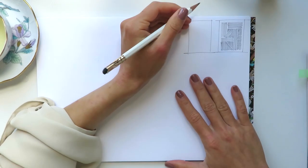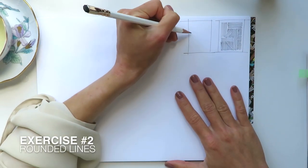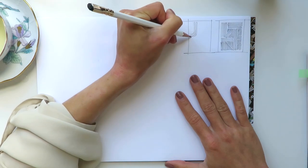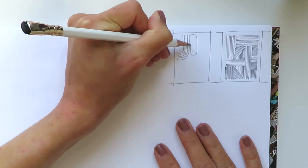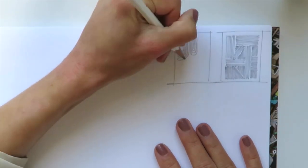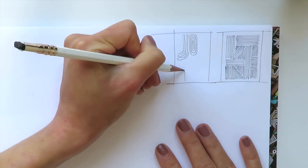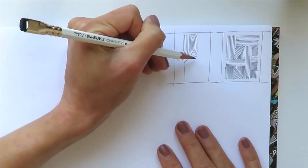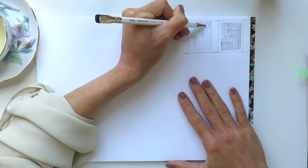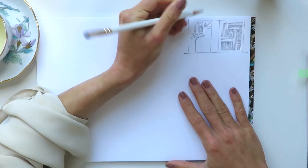Okay, exercise number two. I call it rounded lines. Well, what we want to do here is to draw a really long line without taking our hand off the paper. We can make some circles with it, we can create any forms with it, but try to keep the distance between the lines the same.